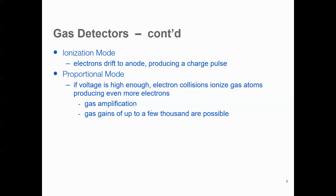Generally, gas detectors work in ionization mode and proportional mode. In ionization mode, electrons drift to the anode producing a charge pulse. In proportional mode, if the voltage is very high enough, then the electrons collide and ionize gas atoms producing even more electrons.